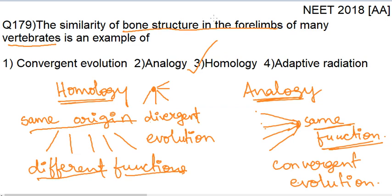The bone structure in the forelimbs of vertebrates is the same — they have a long bone followed by a short bone, and the shape, size, and arrangement of the bones are also the same. Why? Because they are coming from the same ancestor. But during the course of time, they have evolved differently and moved to different geographical locations, so the forelimbs now perform different functions. In some animals the forelimbs help in running, in other vertebrates they can help in flying. So the clear-cut answer is homology — evolving from the same ancestral species but having different functions.